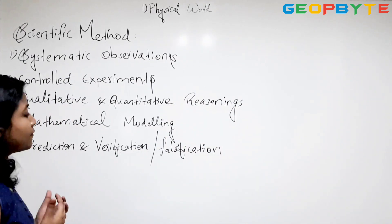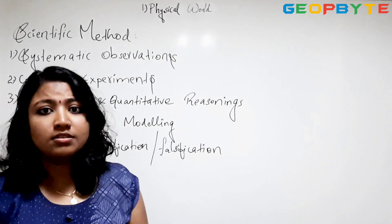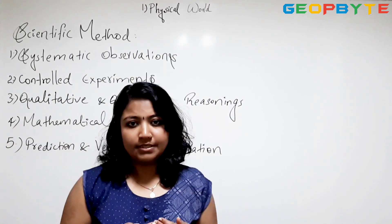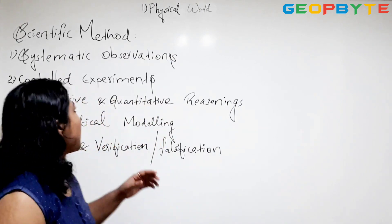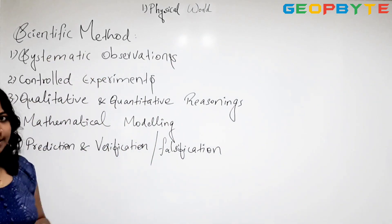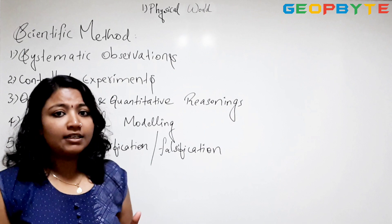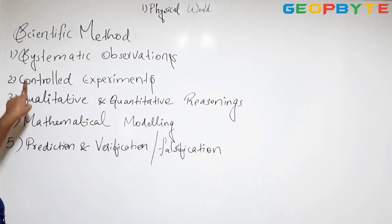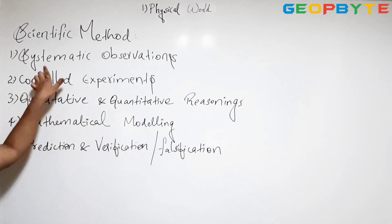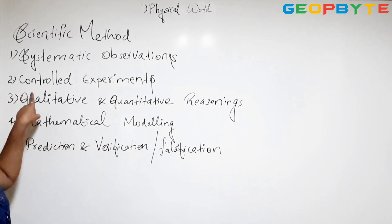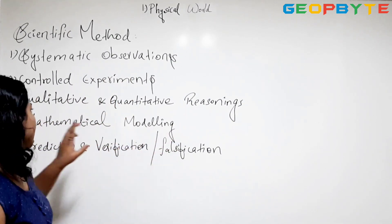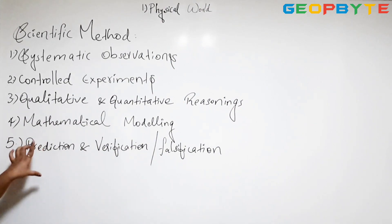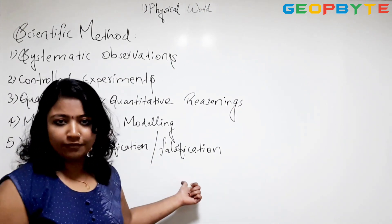Scientists follow certain processes or steps while exploring things, which we can call the scientific method. This scientific method has five steps: systematic observations, controlled experiments, qualitative and quantitative reasoning, mathematical modeling, and predictions and verification or falsification.